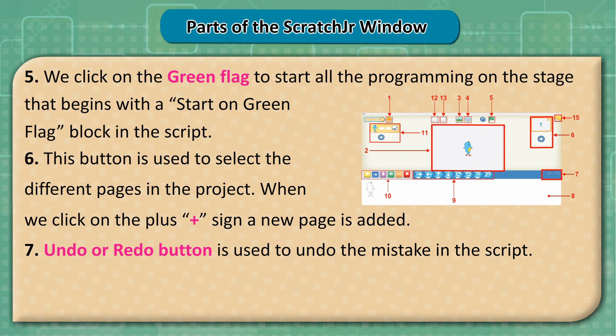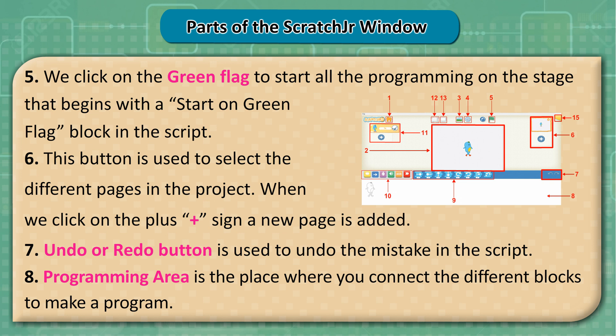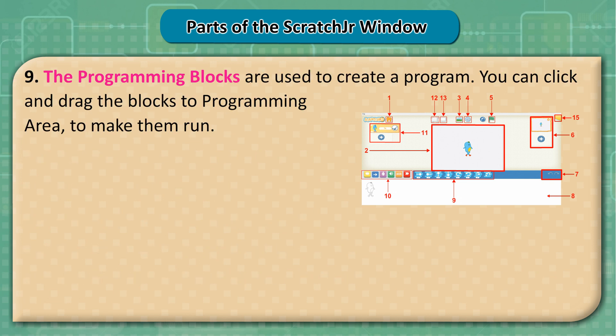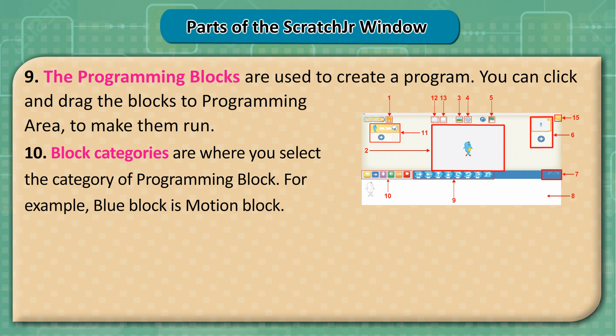7. The Undo or Redo button is used to undo mistakes in the script. 8. The Programming area is the place where you connect different blocks to make a program. 9. The Programming blocks are used to create a program. You can click and drag the blocks to the programming area to make them run.